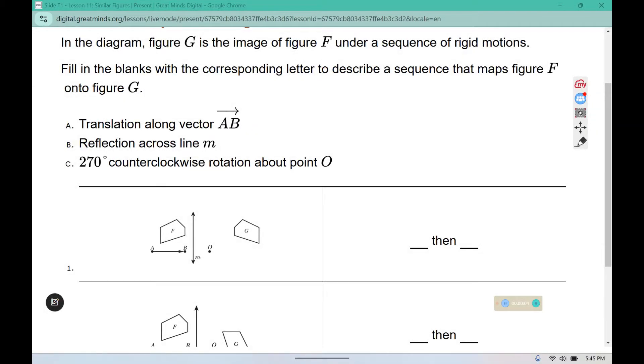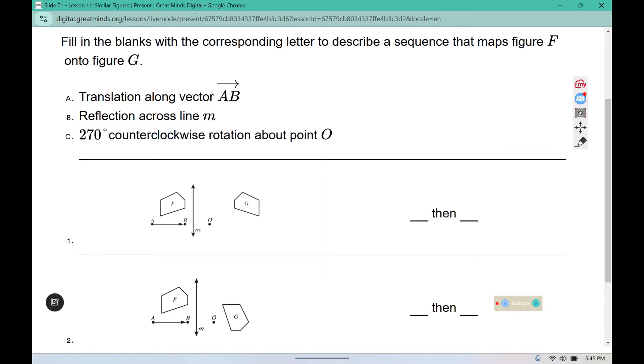In the diagram, figure G is the image of figure F under a sequence of rigid motions, which means G is the new and F is the original. Fill in the blank with the corresponding letters to describe the sequence that maps F onto G.